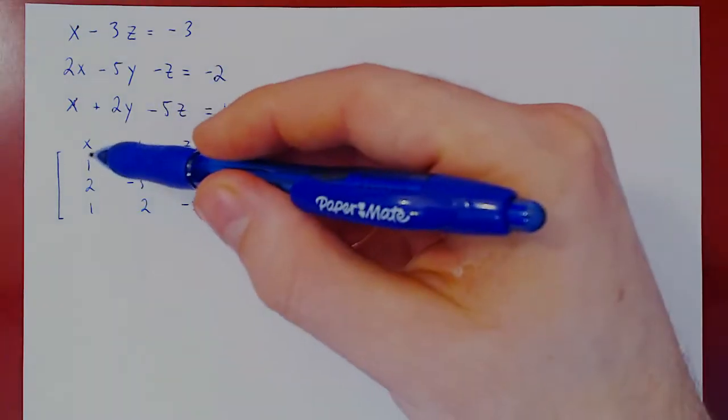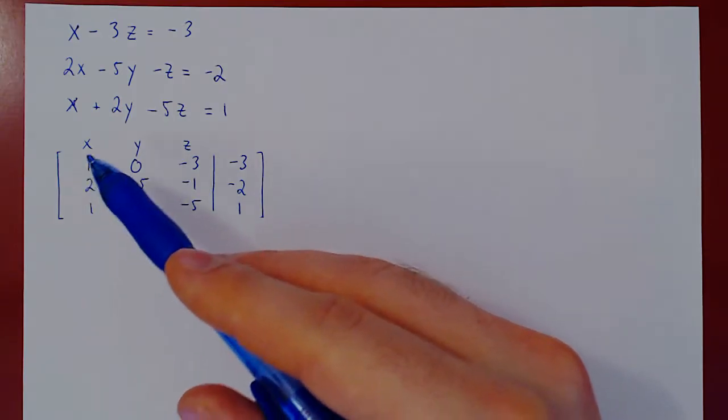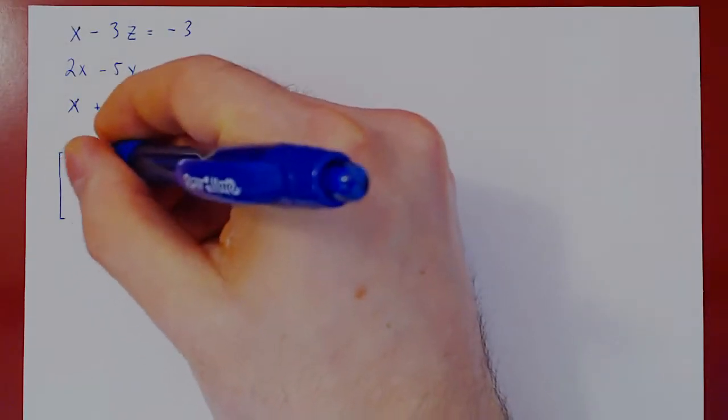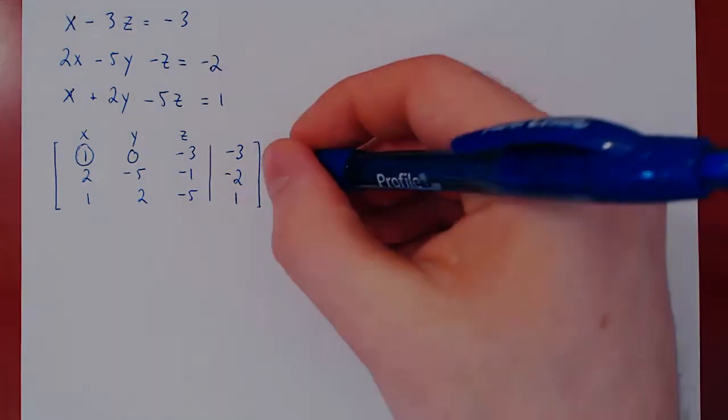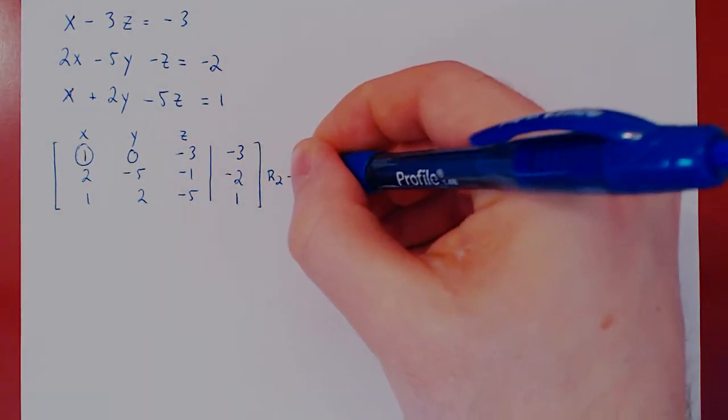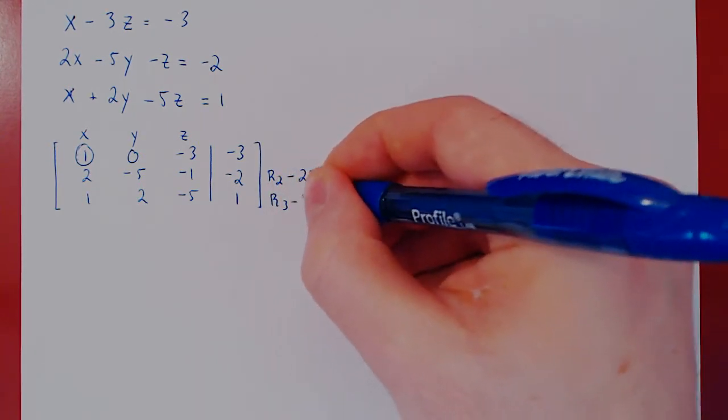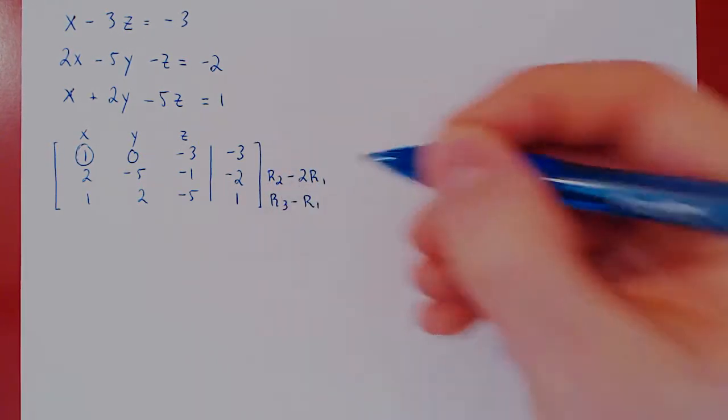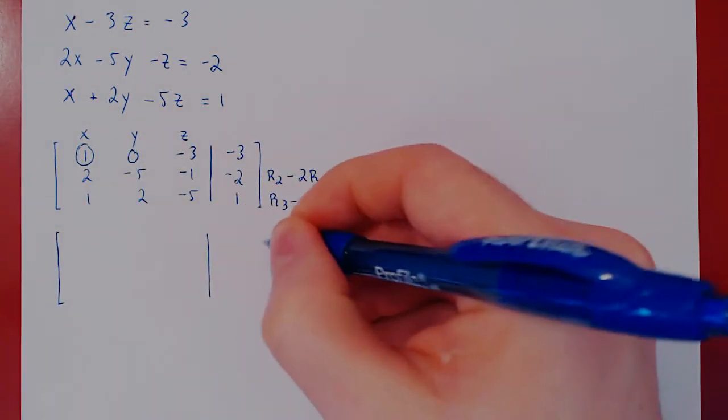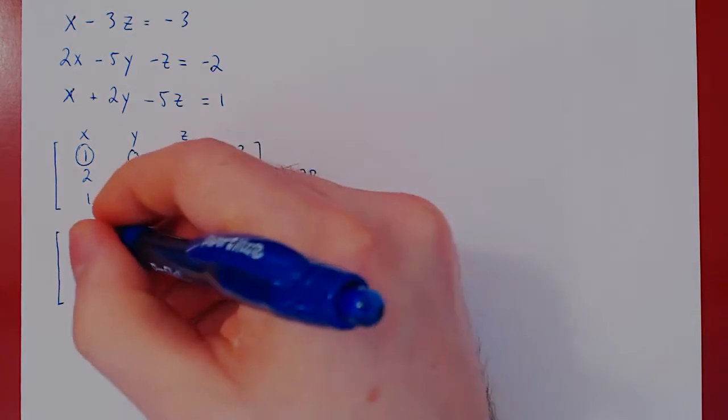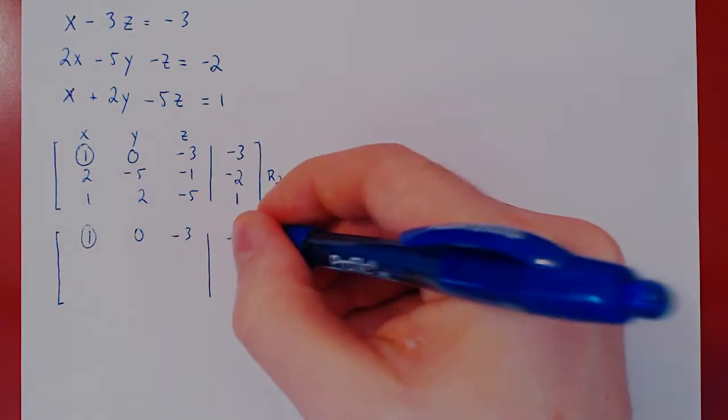We start with the leftmost column and try to introduce a leading 1 in the top row. Well, it already is there. And then we kill the entries below it. So we will do row 2 minus 2 row 1, and we will do row 3 minus row 1. Since we are only changing the second and third row, we will recopy the first one. So 1, 0, negative 3, negative 3.